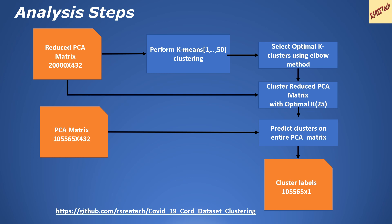We then perform k-means clustering on this reduced PCA matrix. K-means partitions data into k clusters. Since we don't know the optimal number of clusters, we generate k-means clustering using different numbers of clusters, incrementally increasing from 1 to close to 50 clusters, assuming there could be up to 50 groups in our papers.